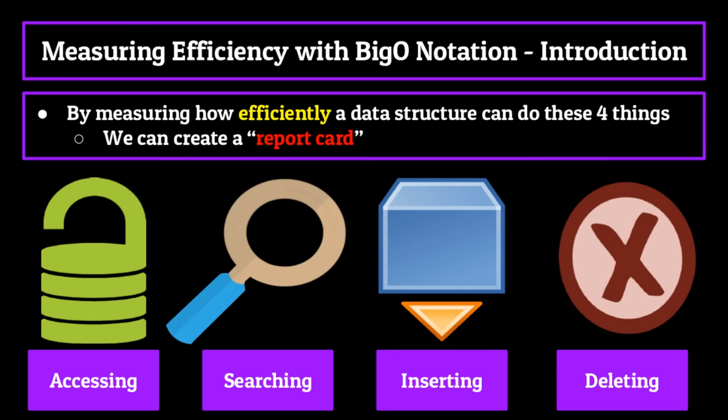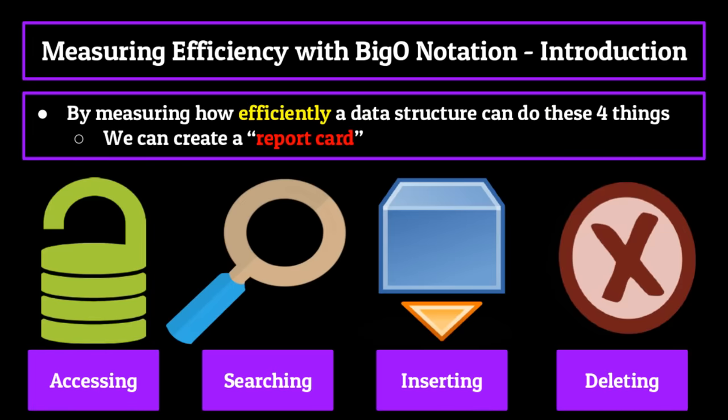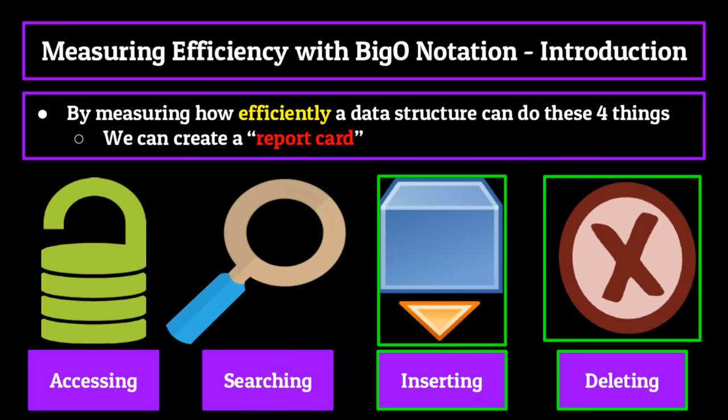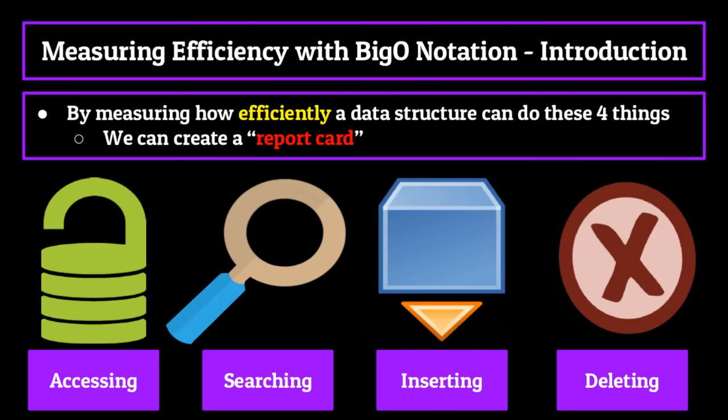If we need to store data that is easily accessible to the end user, we might choose a data structure which can access elements the quickest. Vice versa, if accessing elements isn't the most important thing to us but we need a data structure which can be easily added to and deleted from, we would go for one which is most efficient in that specific functionality. By looking at a data structure's report card, we can get a quick sneak peek at what they're good at and what they're bad at.